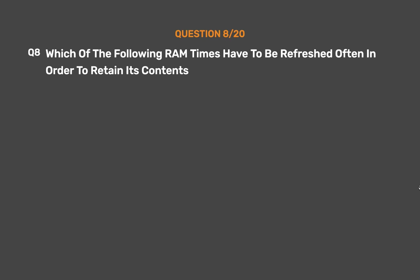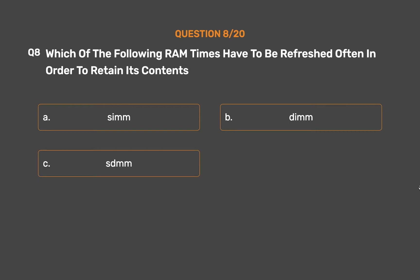Question number 8. Which of the following RAM types has to be refreshed often in order to retain its contents? Option A: SIMM. Option B: DIMM. Option C: SIMM variant. Option D: DSMM.